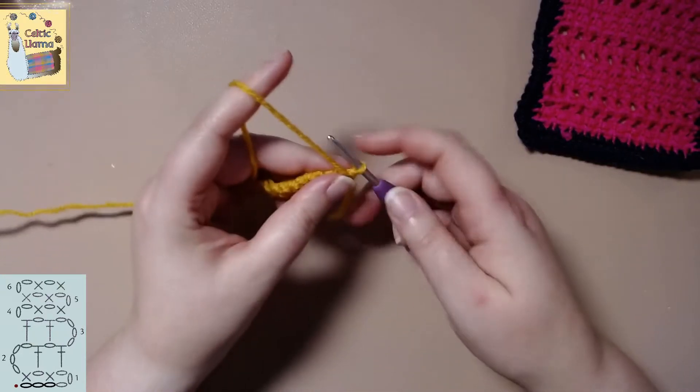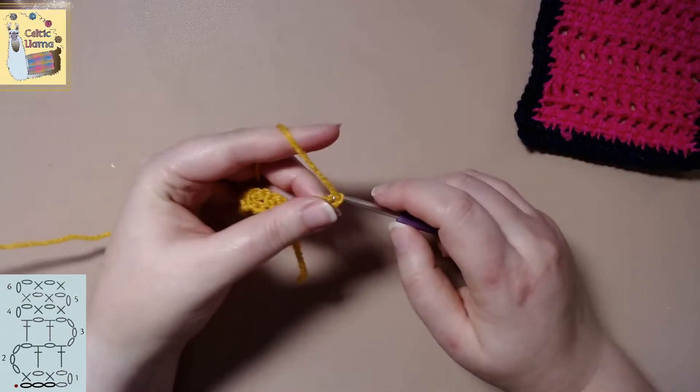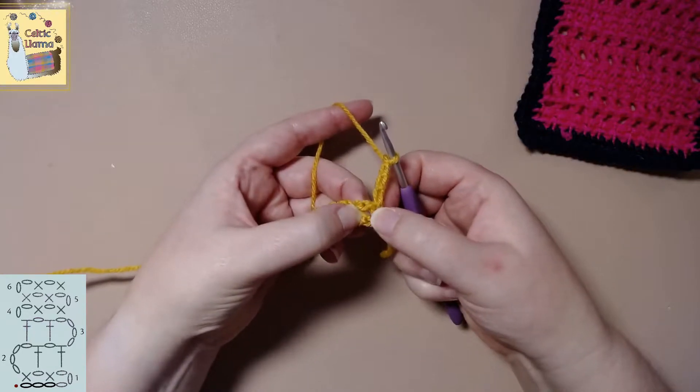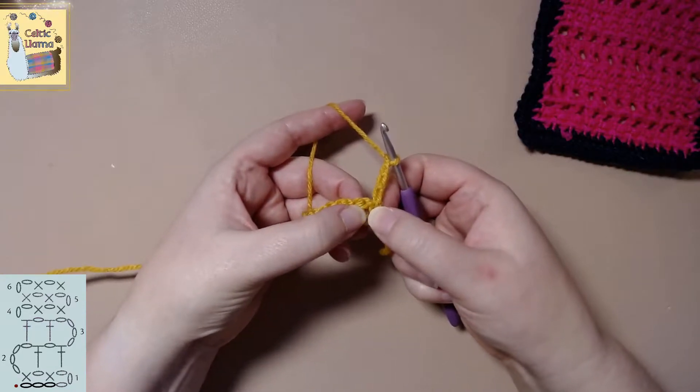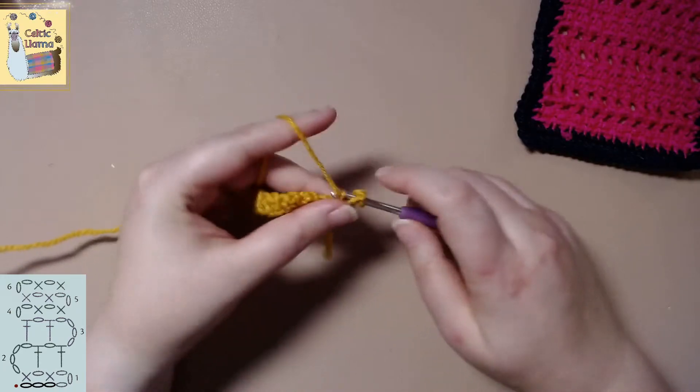Then we will turn our work and we will chain four. Now you want to locate the gap where we had a chain one and skip one. And in that gap you are going to yarn over and do a double crochet.